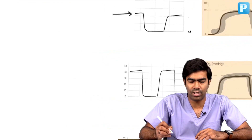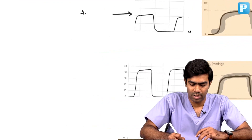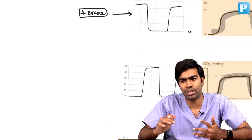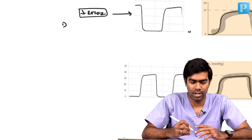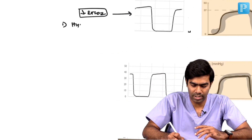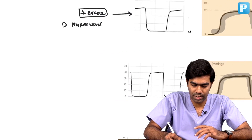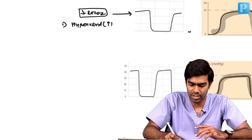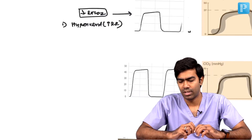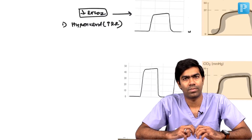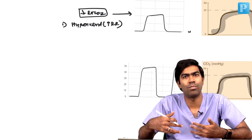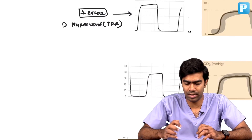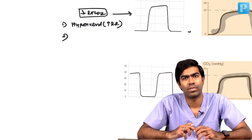Now let me tell you what conditions will produce reduced EtCO2 — either progressively reducing or reduced to a small level. Number one, obviously, hyperventilation. Whenever you have an increased respiratory rate, you are going to have a decreased EtCO2, because with hyperventilation you will have more CO2 elimination, and with hypoventilation you will have reduced CO2 elimination.